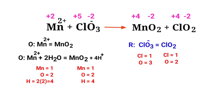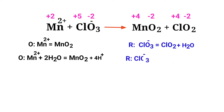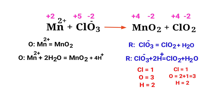Now balance the number of atoms in the reduction half reaction. To balance the oxygen atoms, produce water molecules, and then balance hydrogen atoms by adding H plus ions. Now the number of atoms are balanced in the reduction half reaction.